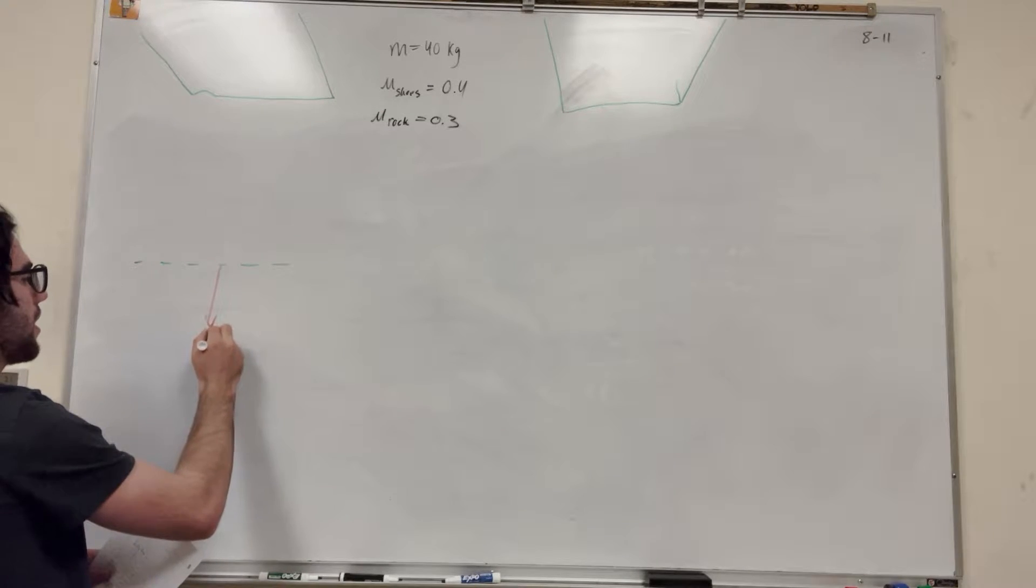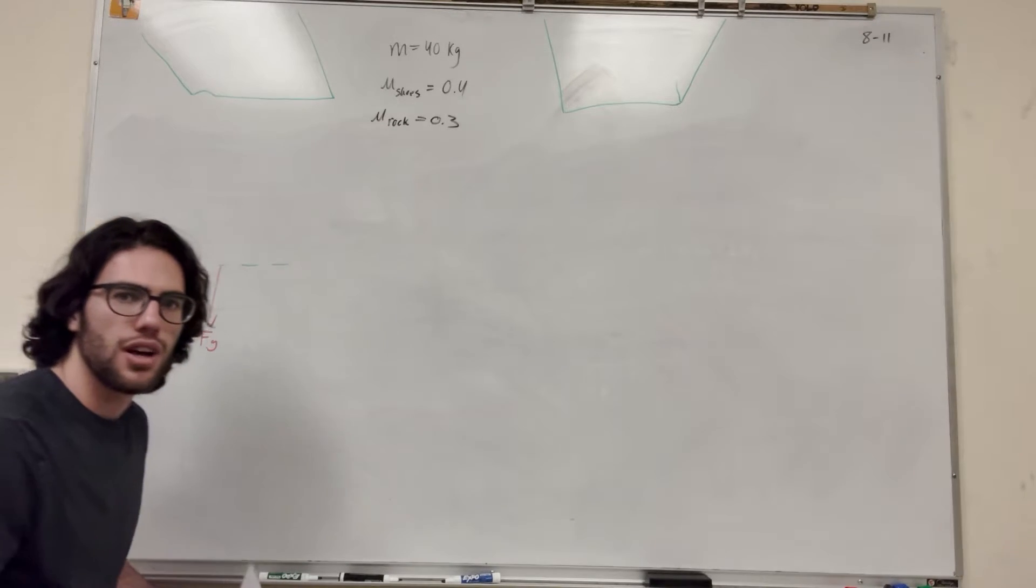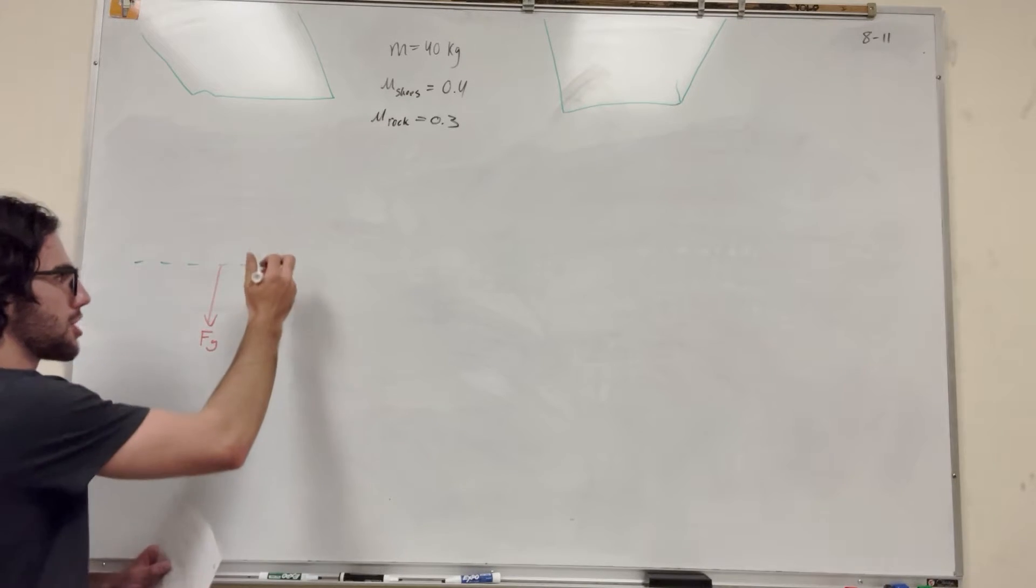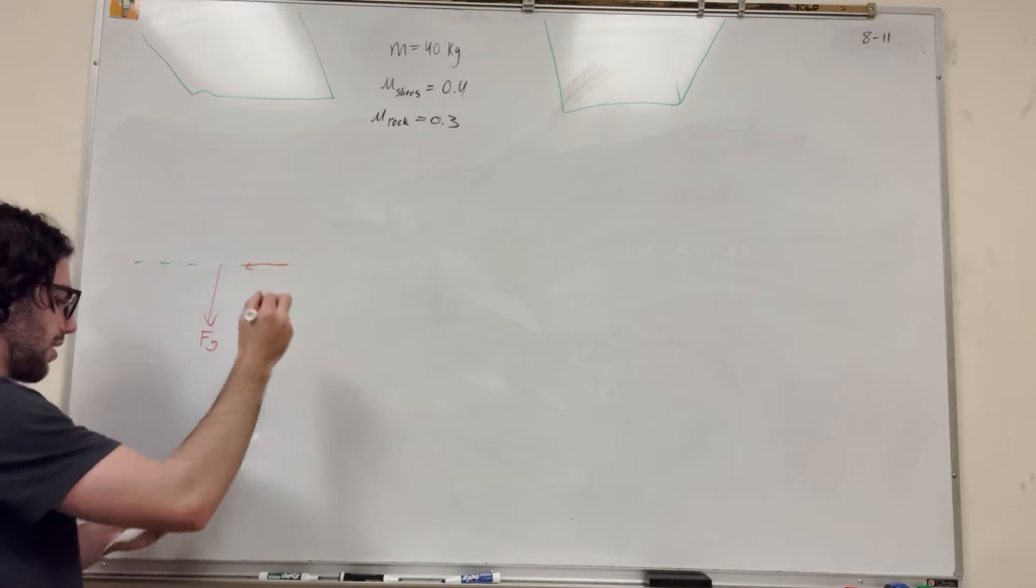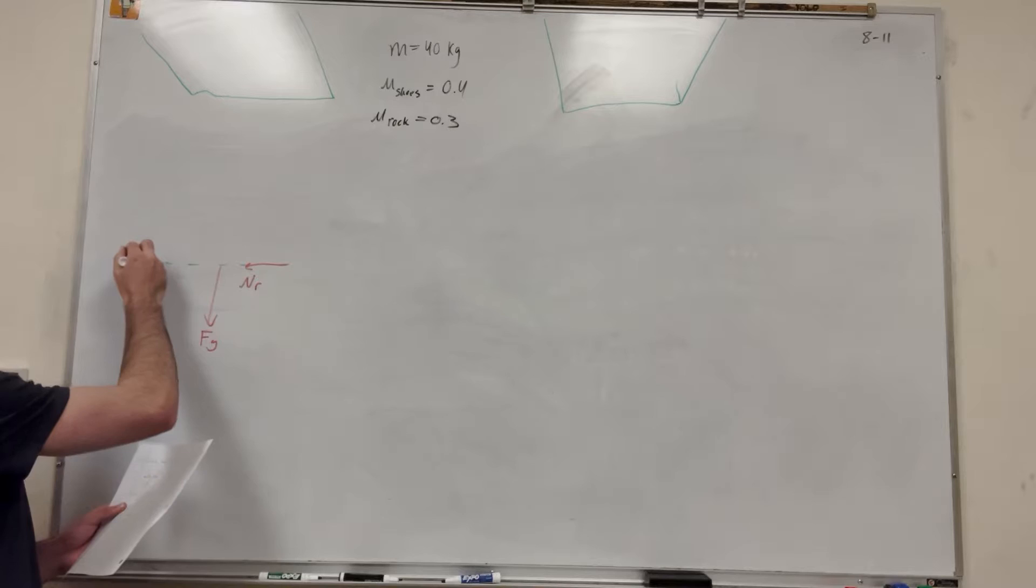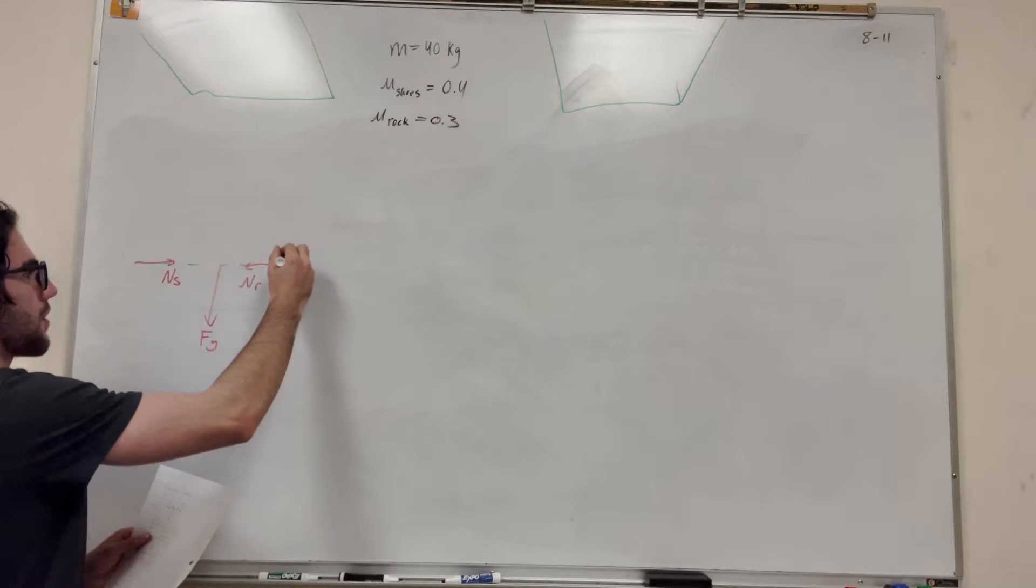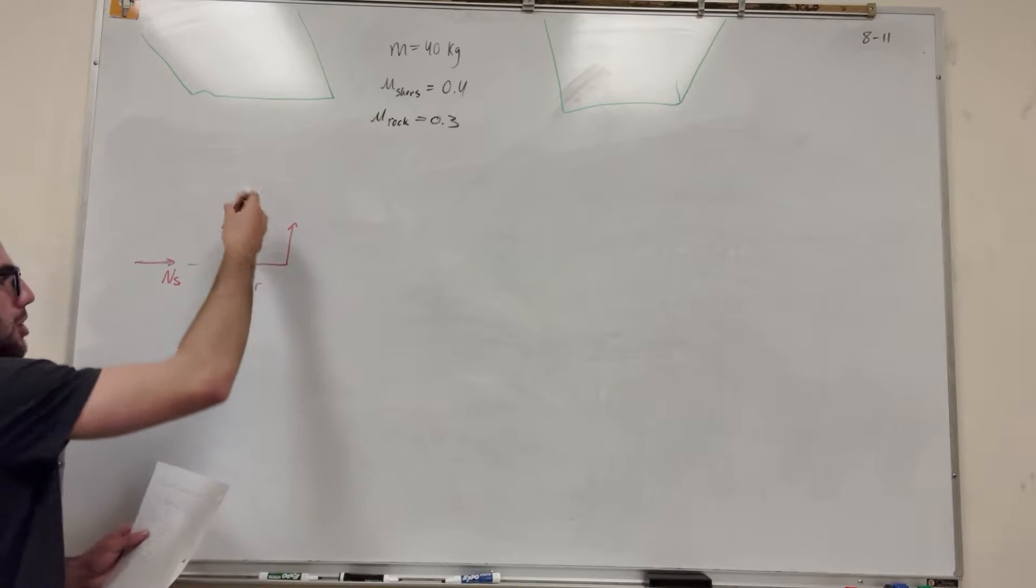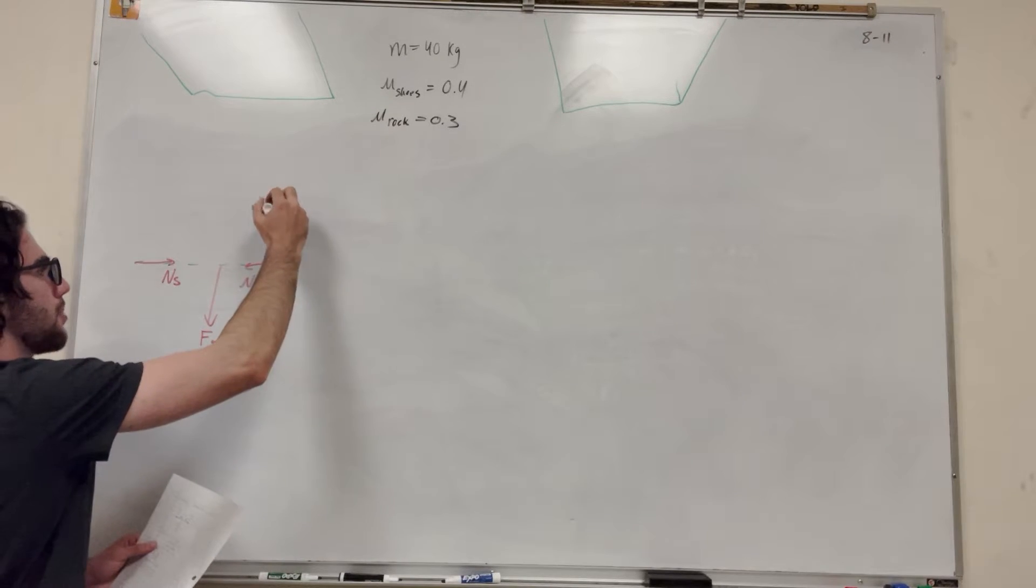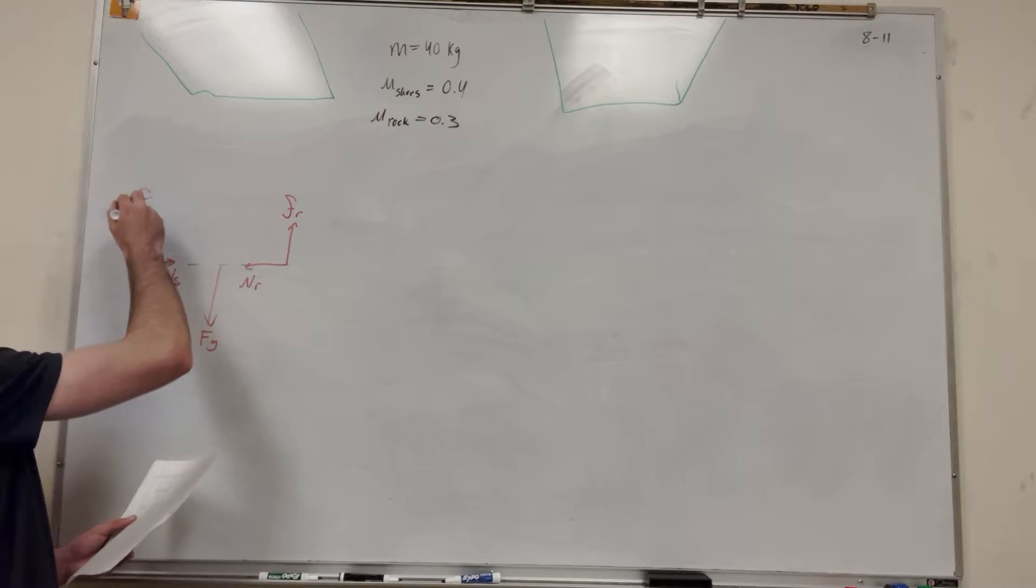So this is a force of gravity. And then, of course, this is the rock wall on either side. So the normal force on each side is going to be pushing inward. So we're going to label this normal of the rock. And then this is the normal from the shoes. And then, of course, friction opposes motion. So the motion wants to move down, so the friction is moving up. So we're going to label this friction of the rock.